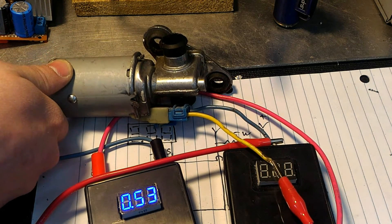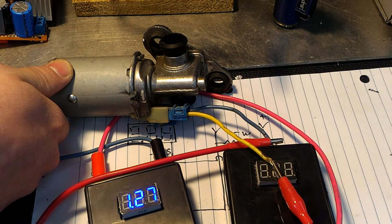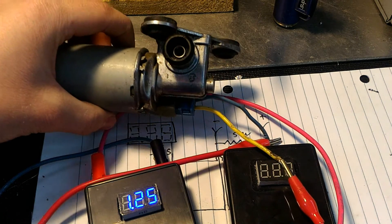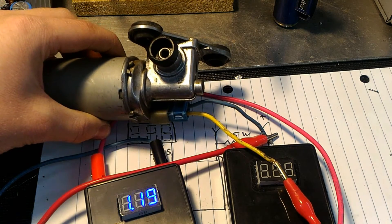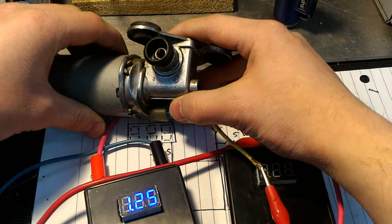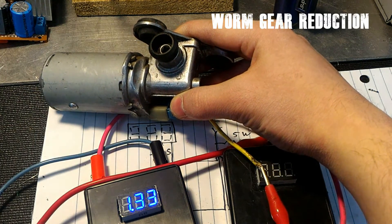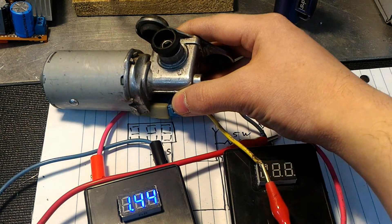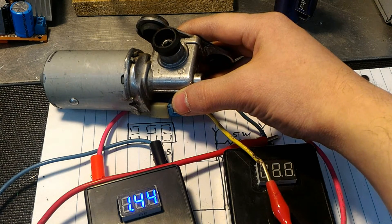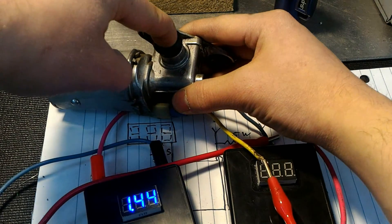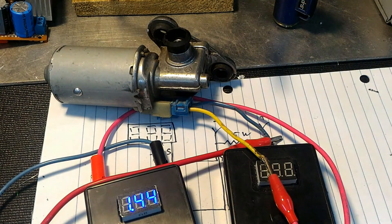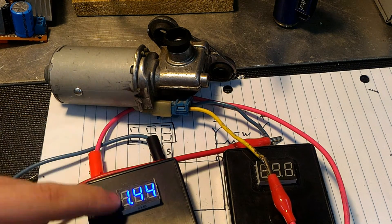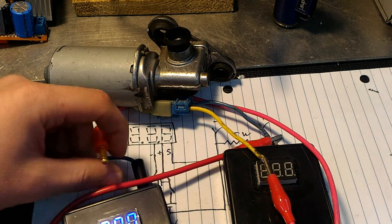Now it starts to spin. As you can see, it's spinning really slowly. And then, okay, so this is full throttle, this is full voltage. That's one.